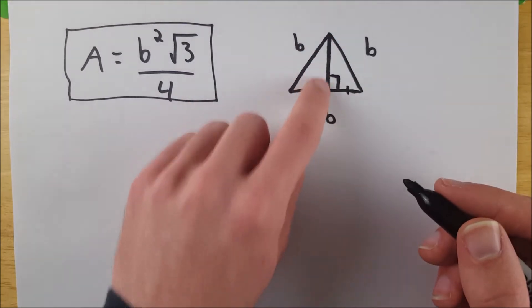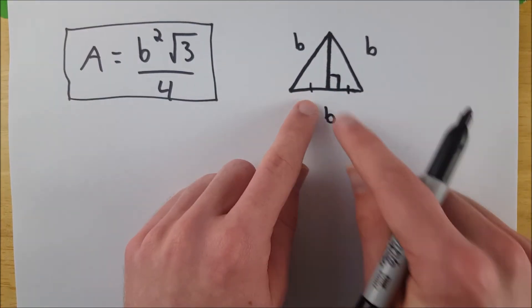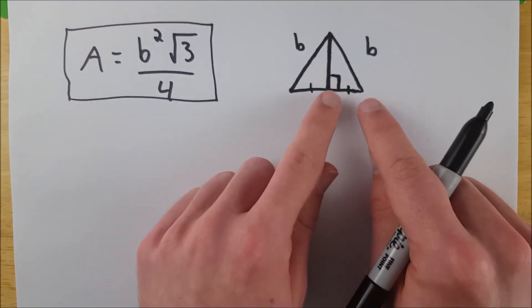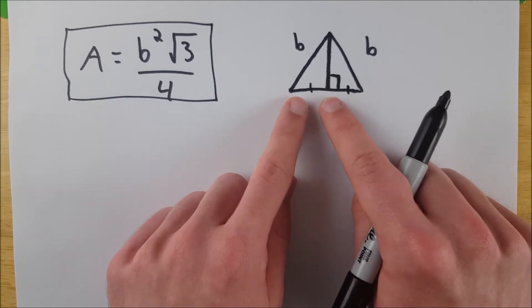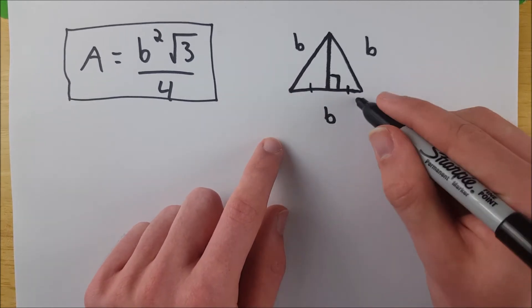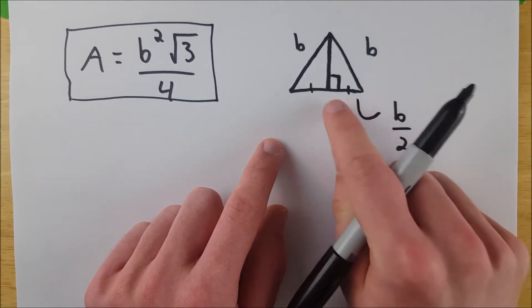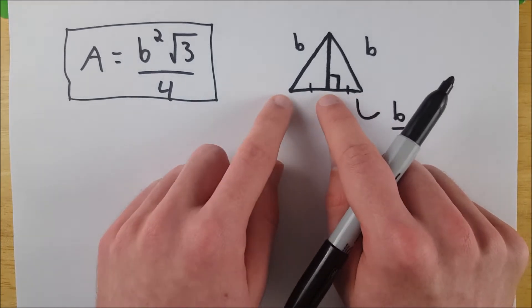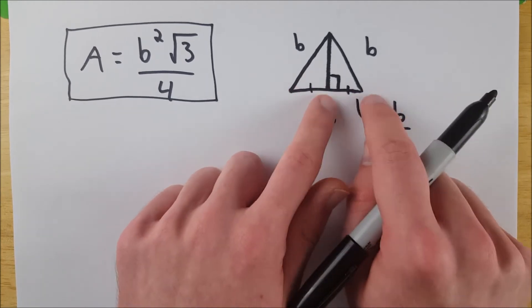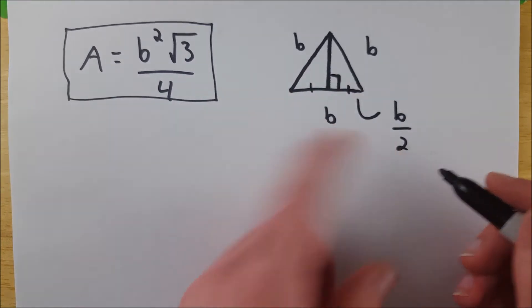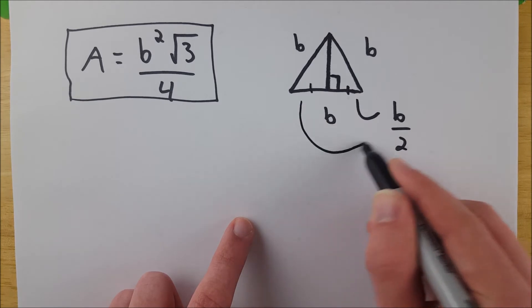Now, if this bisects this side, and we know that this segment is equal to this segment, then we know that they have to each have length b divided by 2. Because the length of the whole thing was b, so if it's now been bisected, then the length of each segment that results from that bisection has a length b over 2. This one does as well.